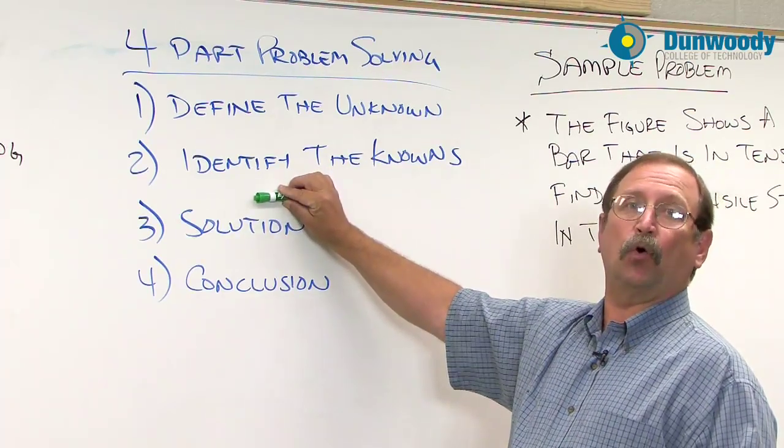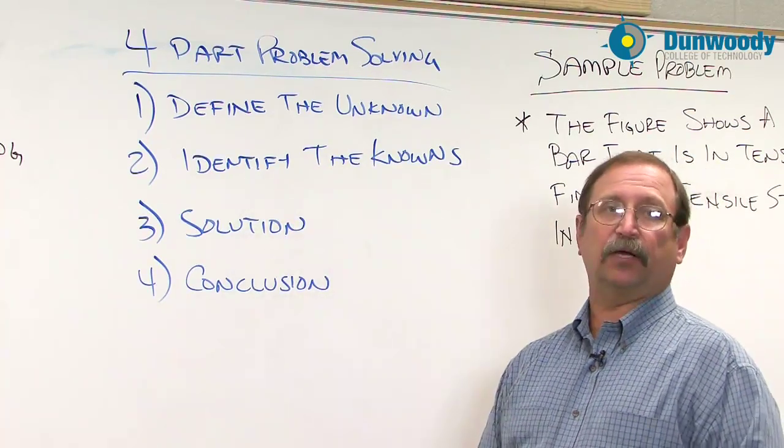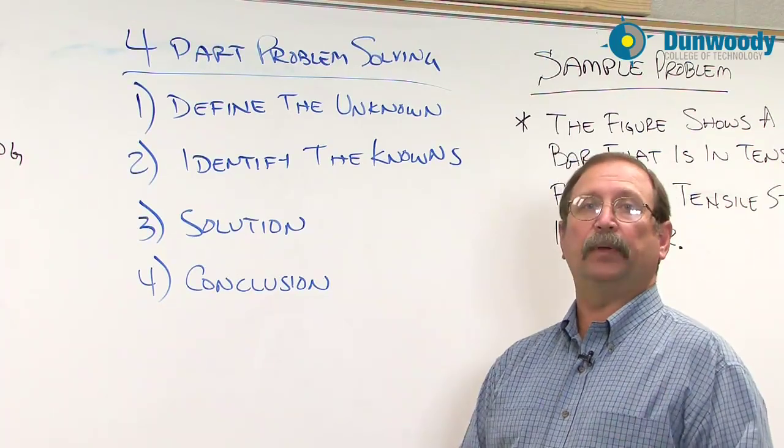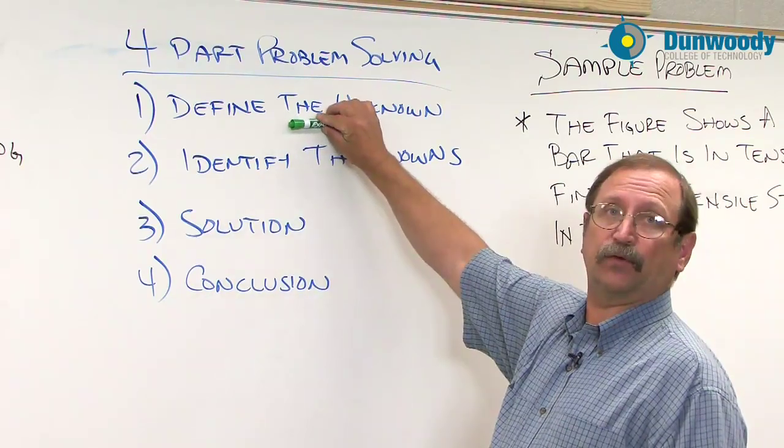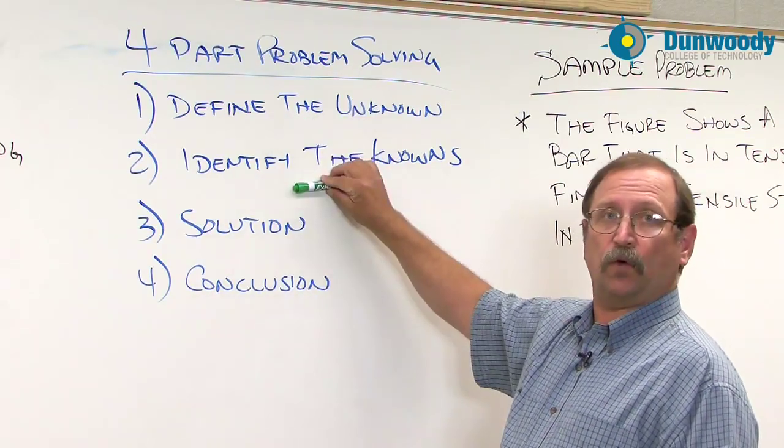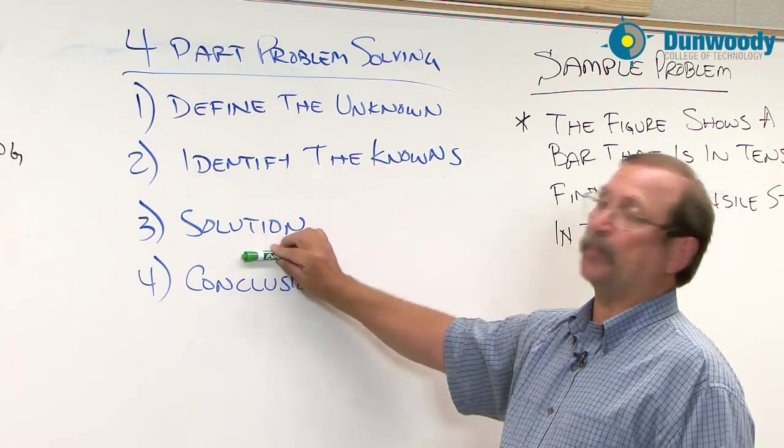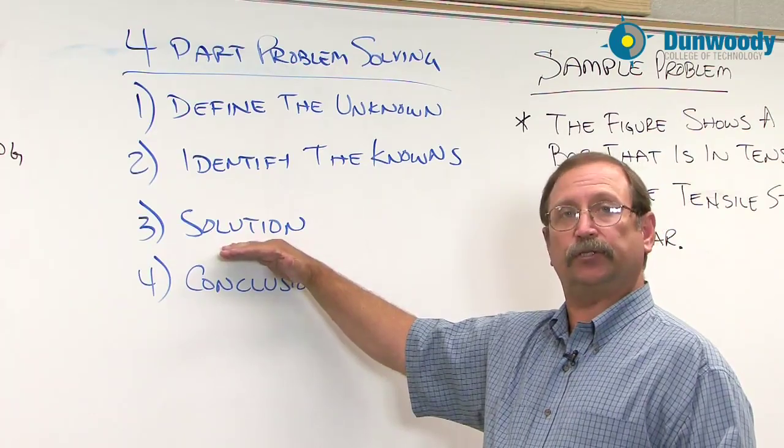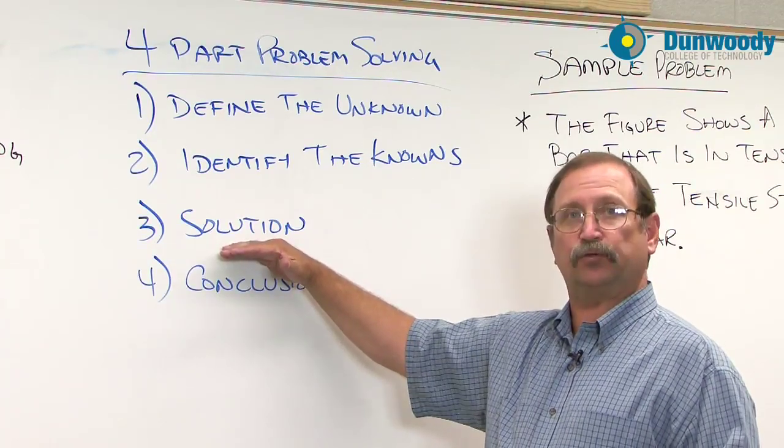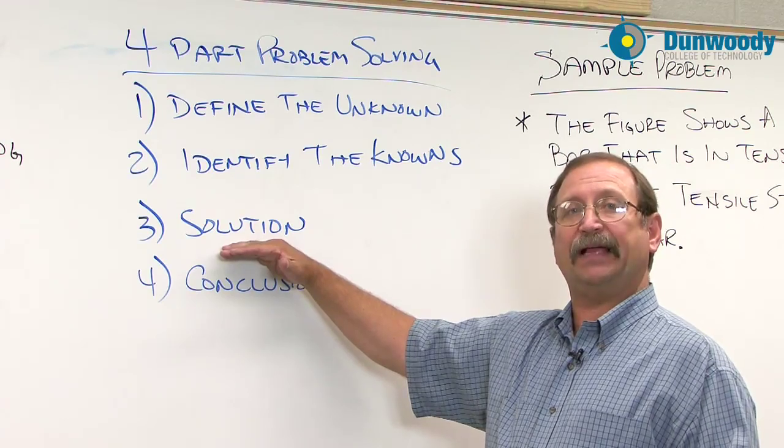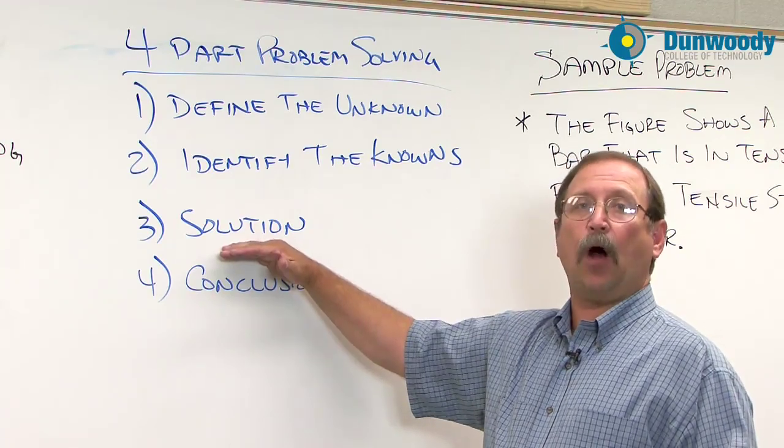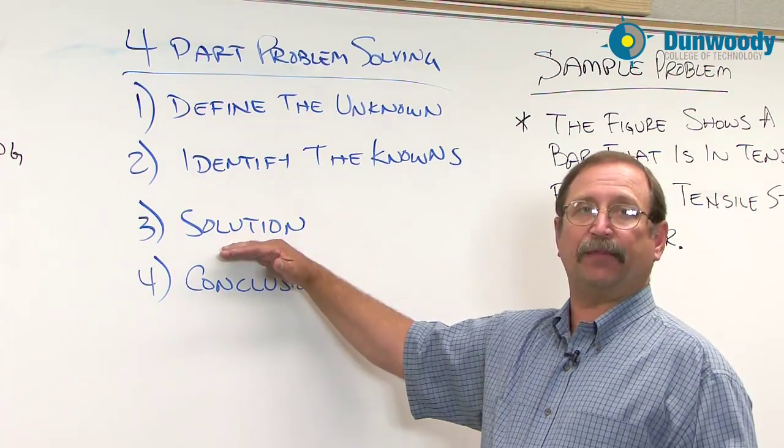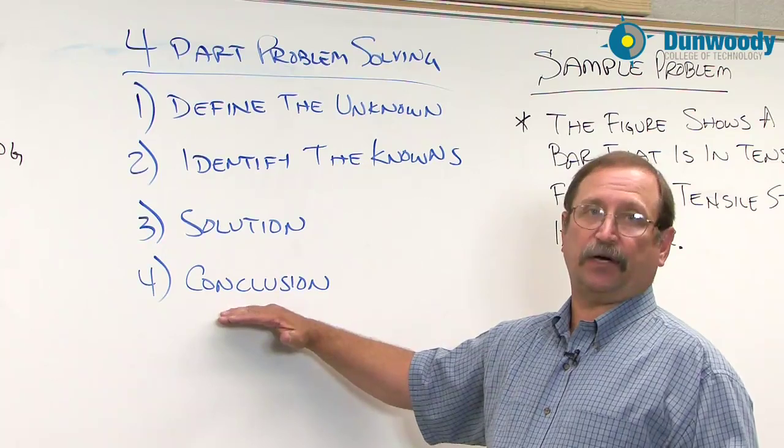There are some things that are going to be given to us and we want to take a look at those items, list them up. If we use variables for the unknown and then also variables for the knowns, it can help us in the solution process. Step three is to find a solution. That's the toughest part usually. We're going to find formulas that will allow us to use our variables in them and then go through the mathematical solution.